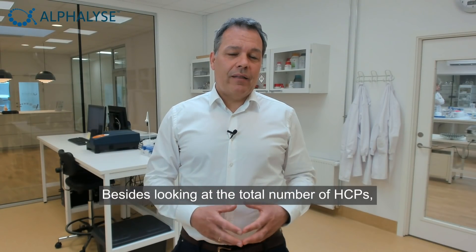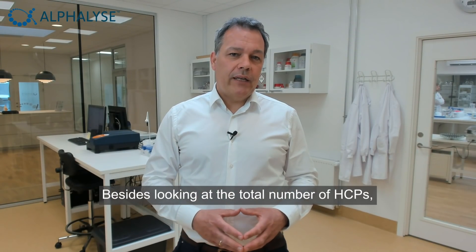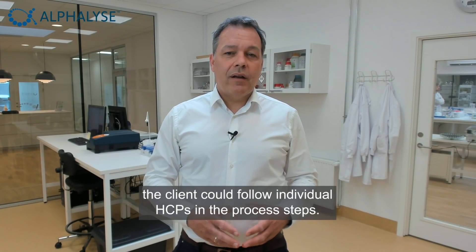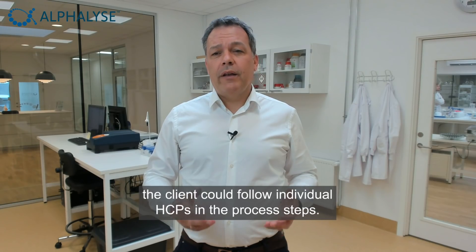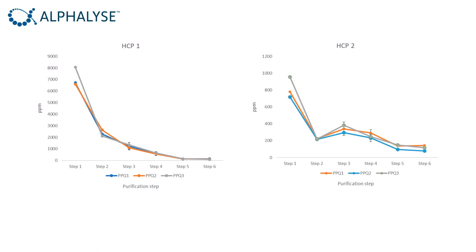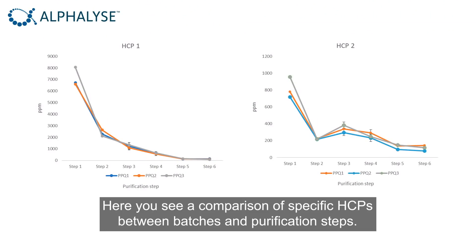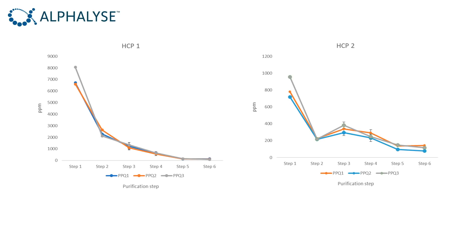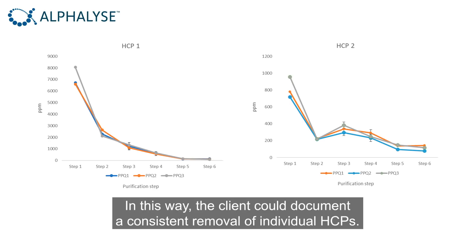Besides looking at the total number of HCPs, the client could follow individual HCPs in the process steps. Here you see a comparison of specific HCPs between batches and purification steps. In this way, the client could document a consistent removal of individual HCPs.